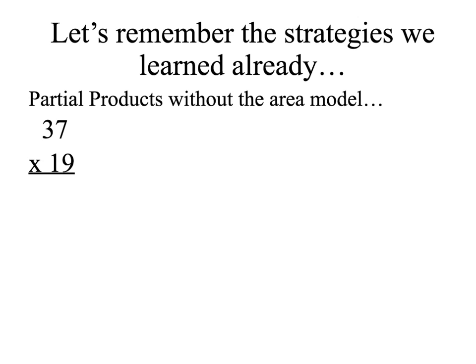Let's solve that same problem now with partial products without the area model. To do this I'm still breaking apart both numbers into 30 and 7 and 10 and 9. Only this time I'm thinking about it in my head and multiplying each number by its value. So 9 ones times 7 ones is 63, and 9 ones times 3 tens is 27 tens or 270. 1 ten times 7 ones is 70, and 1 ten times 3 tens is 300.